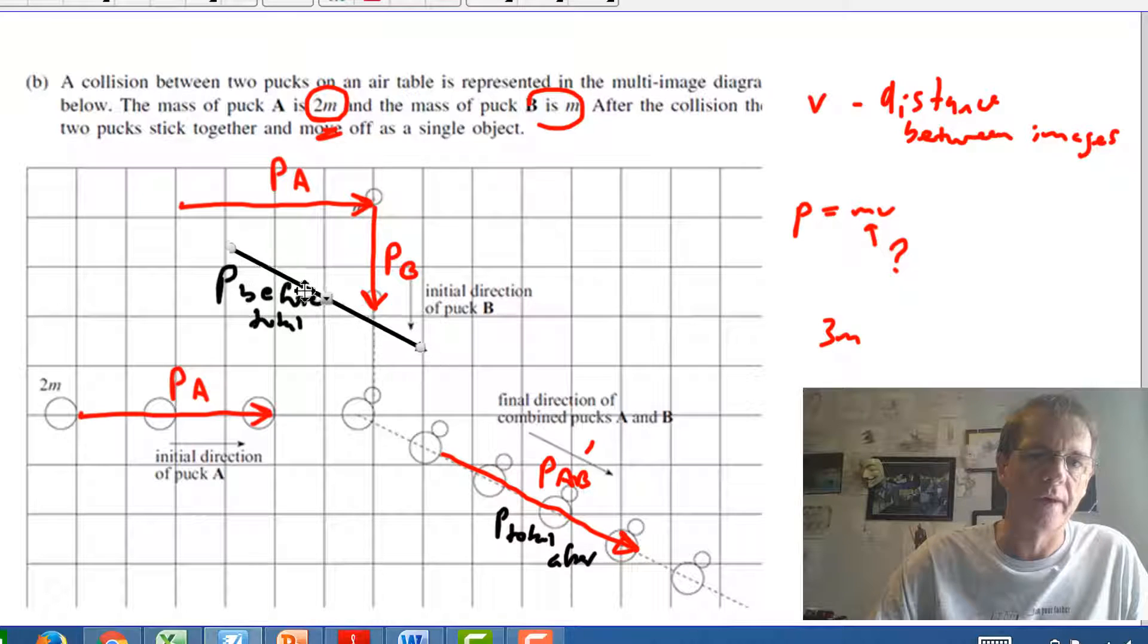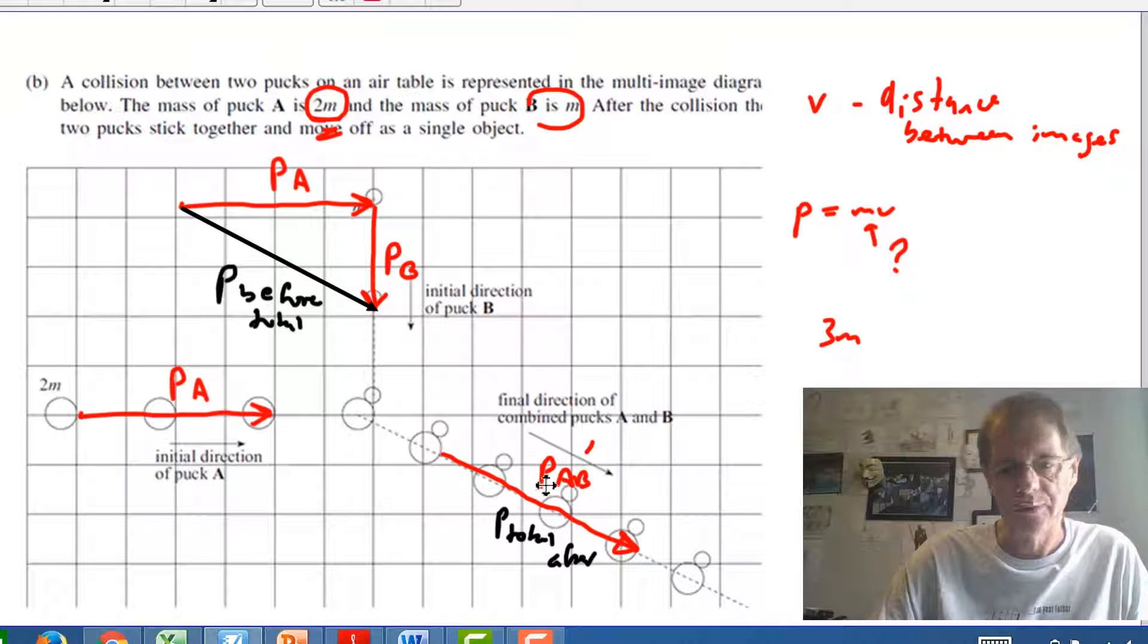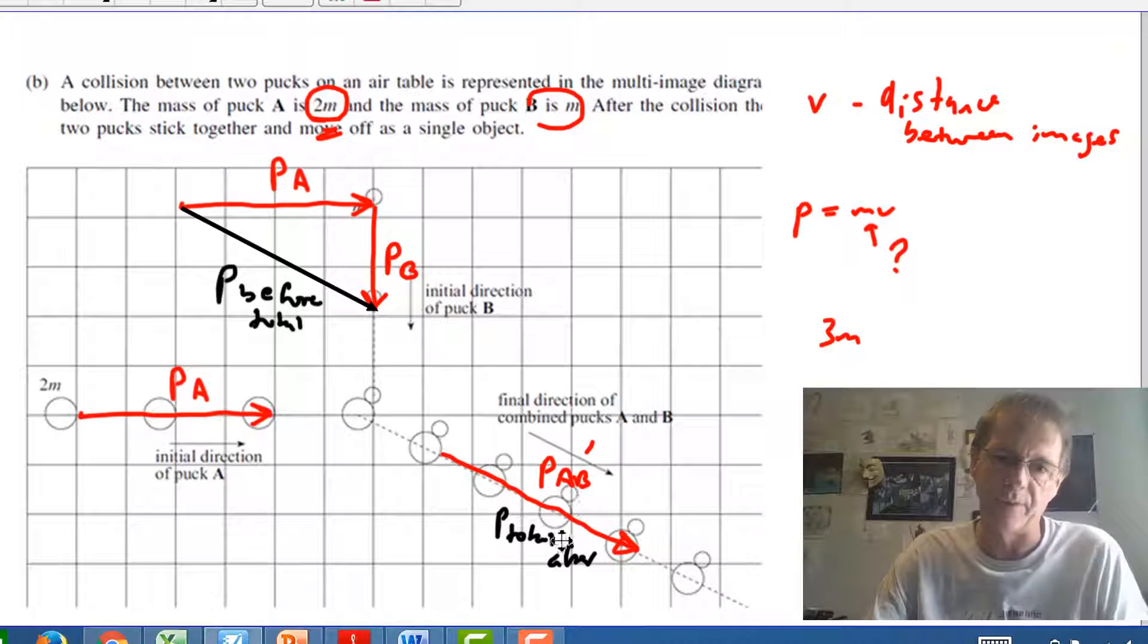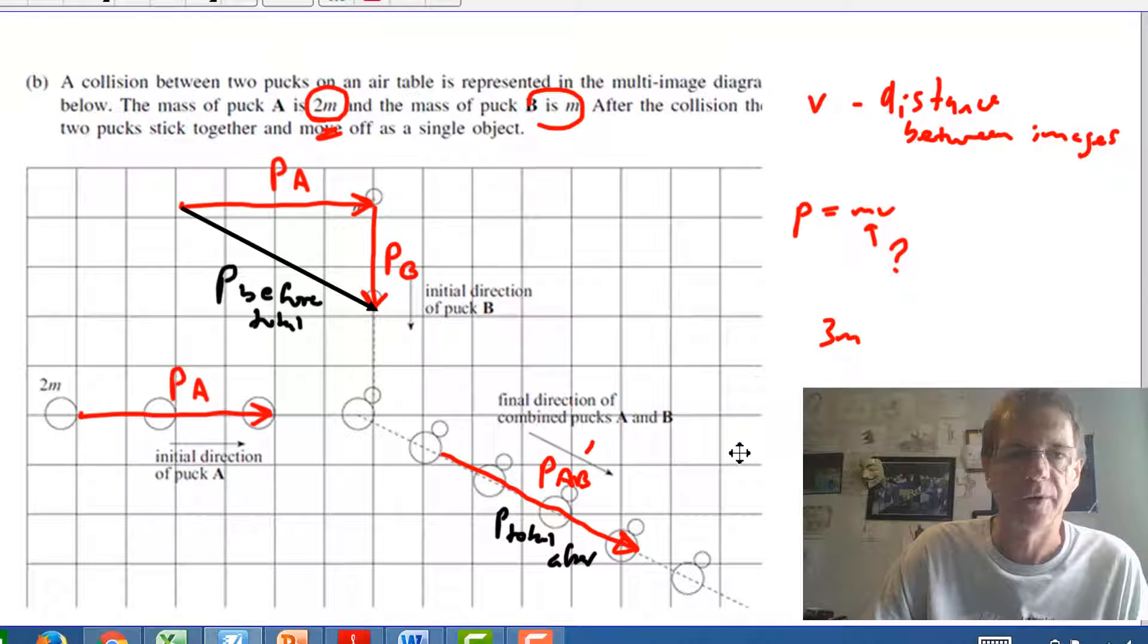And it's pretty much exactly in the same size and direction. So you can check it with the ruler then just to see if it's the same size. But in this case here it is the same size it is the same direction. So I'd be saying the total momentum vector beforehand is equal to the size and direction of the total momentum after so therefore total momentum is conserved.